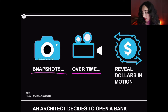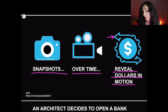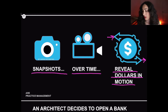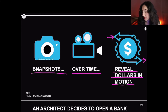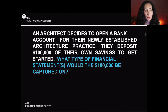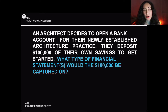Finally, we have the cash flow statement, which reveals dollars in time. It shows you where money is going into the firm and where money is going out — your inflows and your outflows. These three icons are excellent ways to understand, not just memorize, the three different financial statements. This is a good moment to get a piece of paper and a pen and follow along.